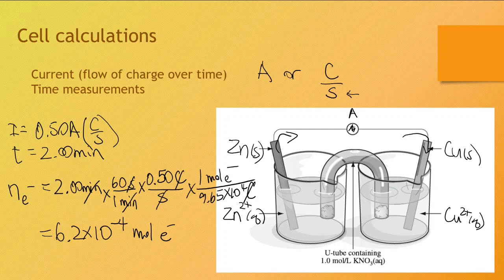So solving this problem, we would get this rather small amount of electrons flowing through. But as we're going to see, even small amounts of electrons can result in measurable mass changes because of the calculation for molar mass.